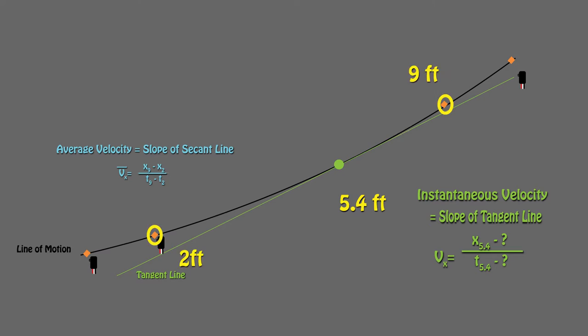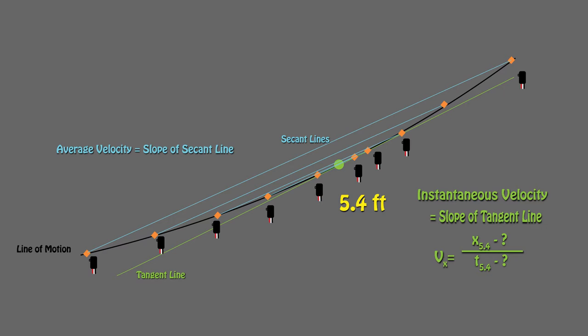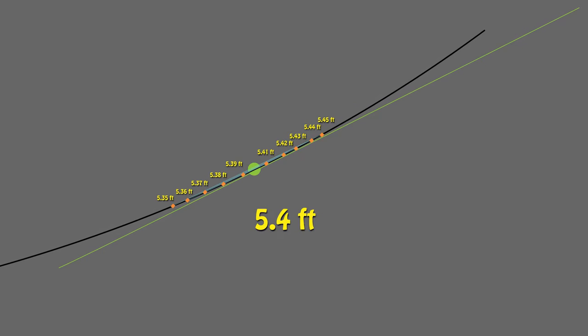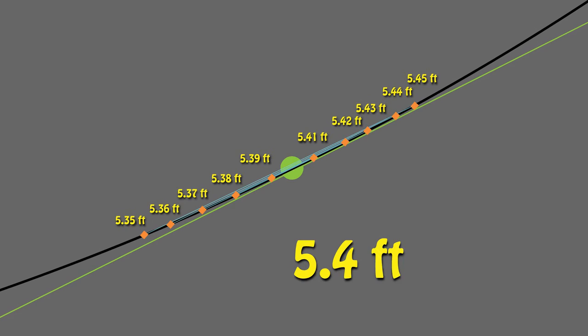As we added sensors, our secant line connecting the two data points got smaller and smaller. We can create secant lines that get shorter and shorter as we close in on our point of interest. As we do this, the slope of our secant line gets closer to the slope of the tangent line. We can draw smaller and smaller secant lines and approach any value on our graph, but we will never reach them. The closest we can get is an infinitesimally small secant line.